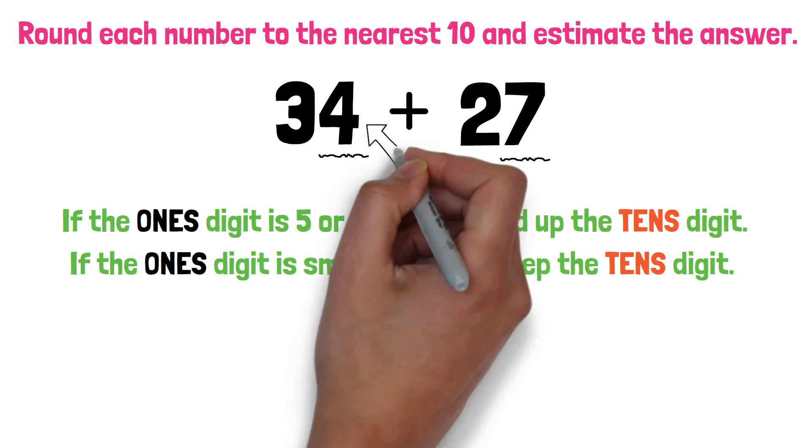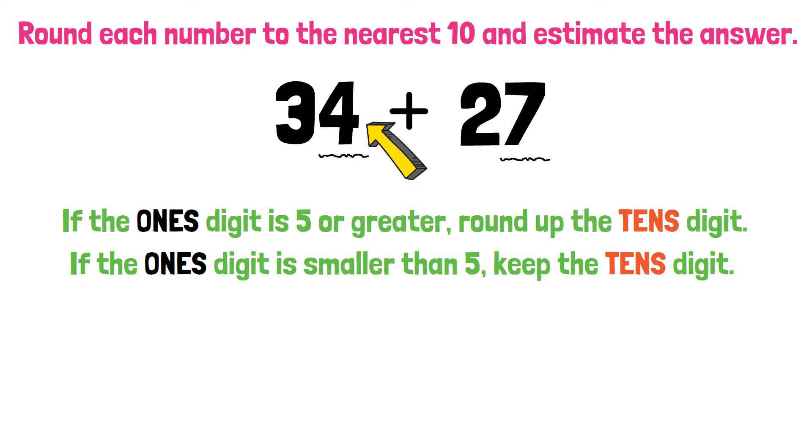For the number 34, the 1's digit is 4. What should you do? That's right. 4 is smaller than 5, so keep the 10's digit. 34 will round to 30.